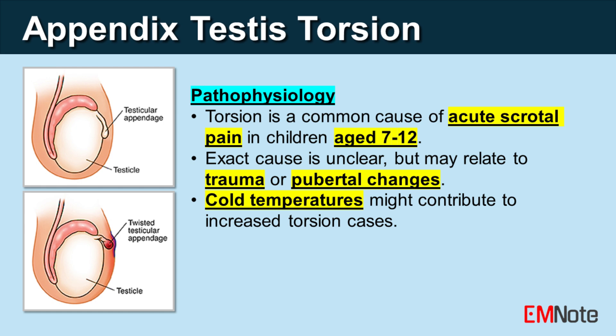Pathophysiology of appendix testis torsion. Torsion, or twisting, of the appendix testis is a common cause of acute scrotal pain, particularly in children between 7 and 12 years old. While the exact cause of torsion is unclear, it is thought to be related to factors like trauma or the enlargement of the testis during puberty.